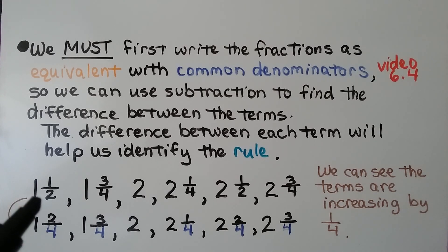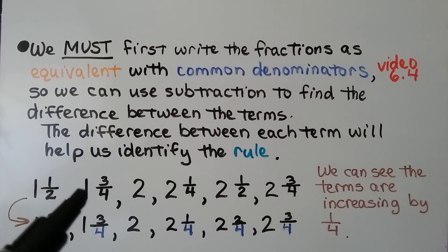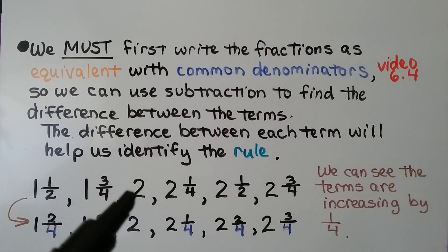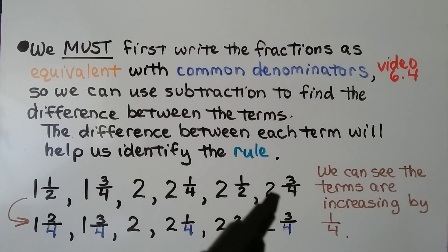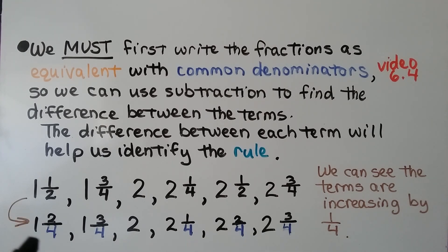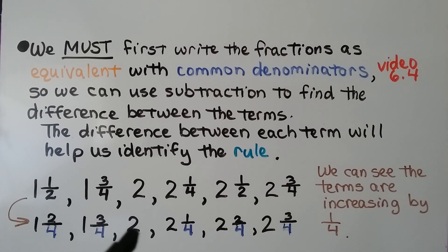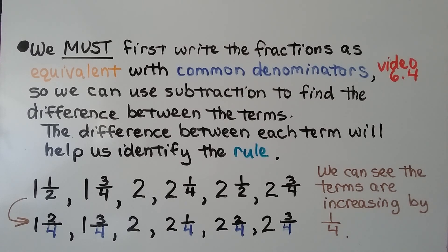We have one and a half, one and three fourths, two, two and one fourth, two and one half, two and three fourths. If we write them all with a common denominator, we get one and two fourths, one and three fourths, two, two and one fourth, two and two fourths, two and three fourths. We can see the terms are increasing by one fourth.